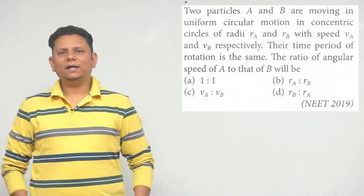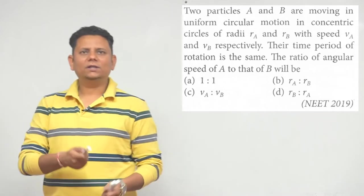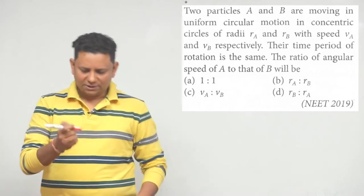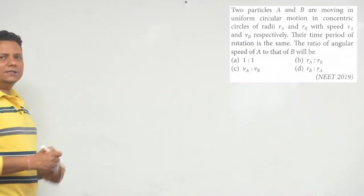What will be the ratio of their angular speed? Options: 1 is to 1, RA is to RB, VA is to VB, or RB is to RA. Now if you look at this question, two particles in concentric circles, both are different.